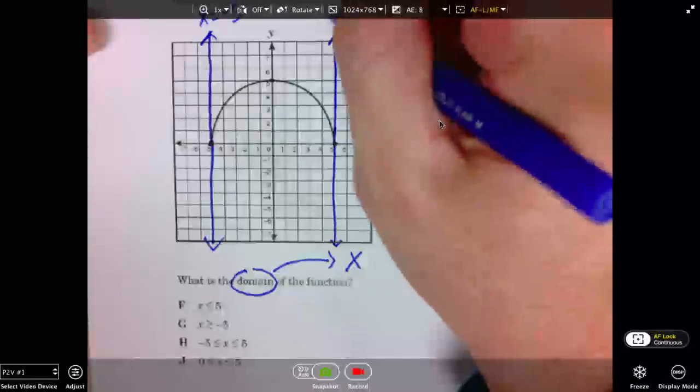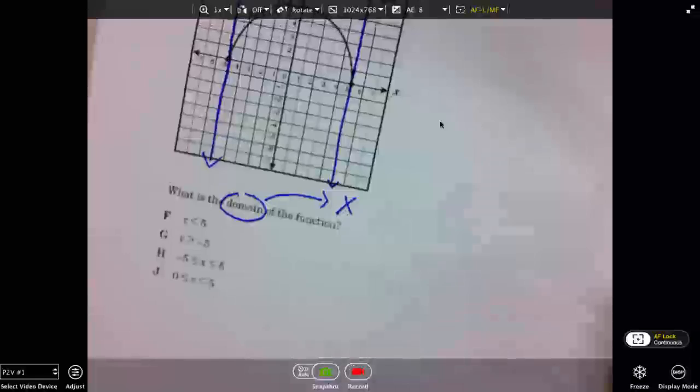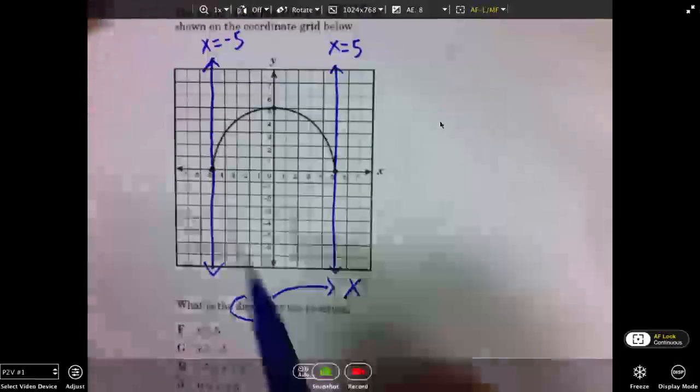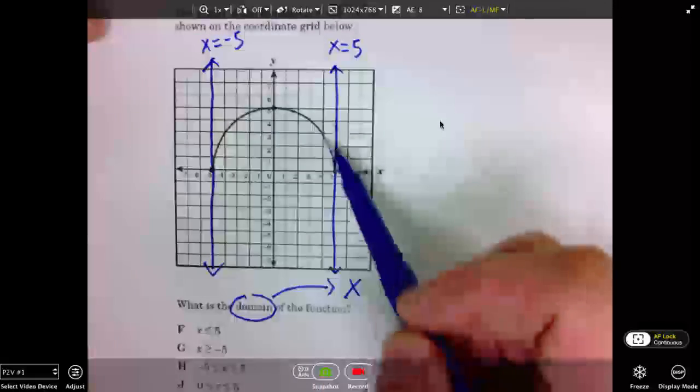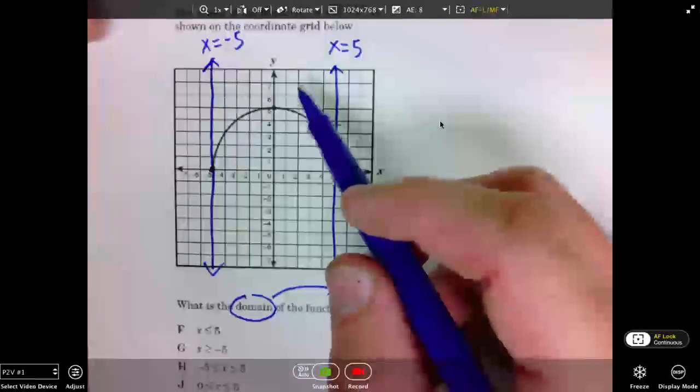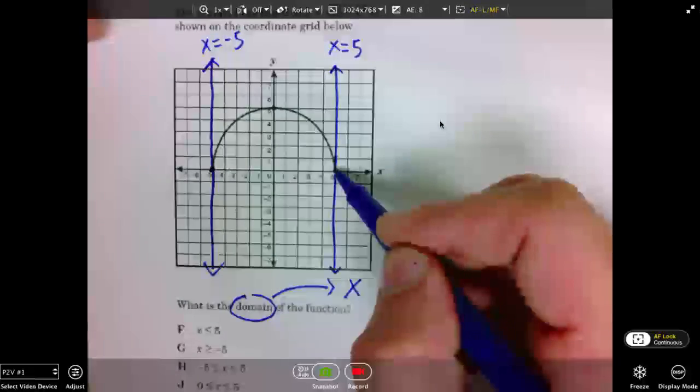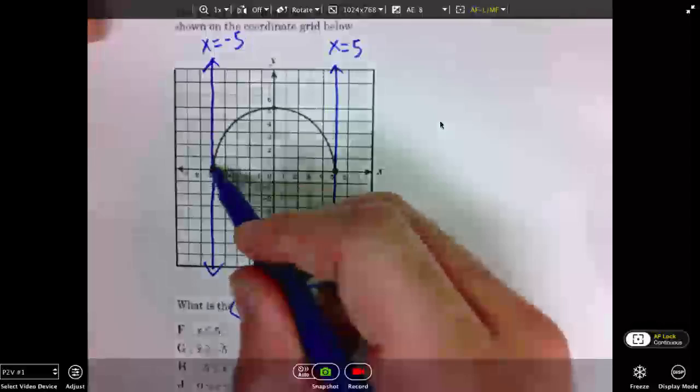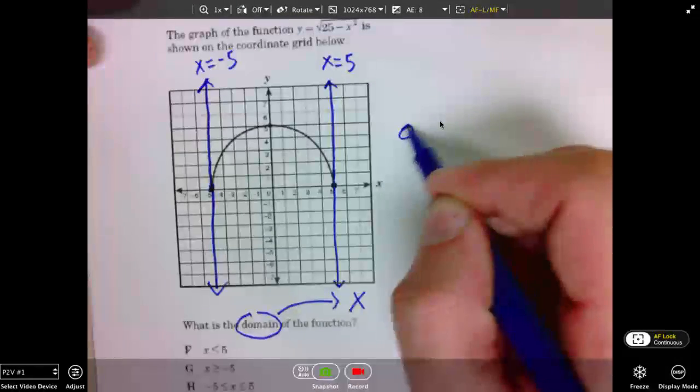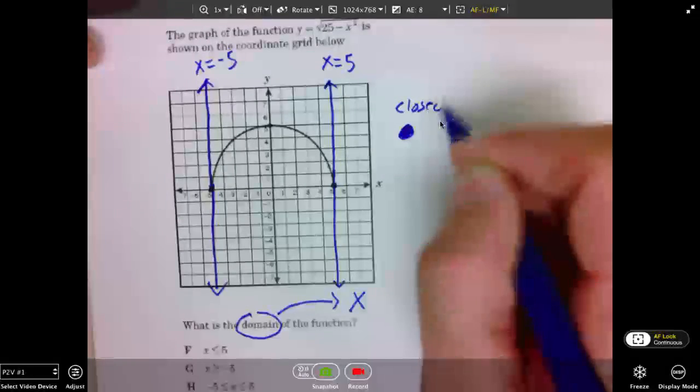The right bound is positive 5. All X values on this line are positive 5. So, we can see that on this graph, the X values will go from negative 5 to positive 5. In this case, we do need the equal to because these points are colored in. We call them closed. A colored in point, we call closed.